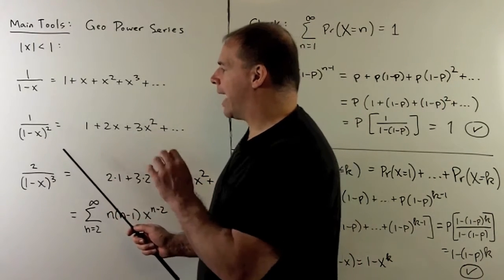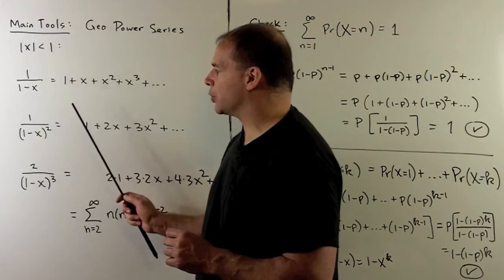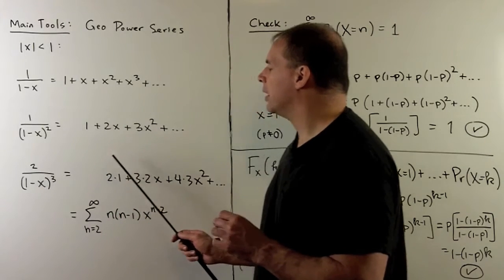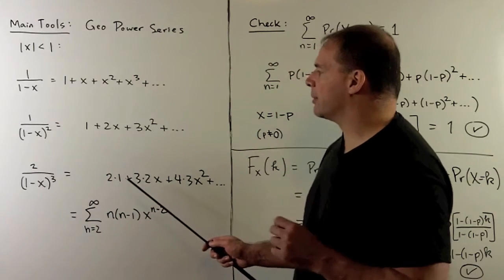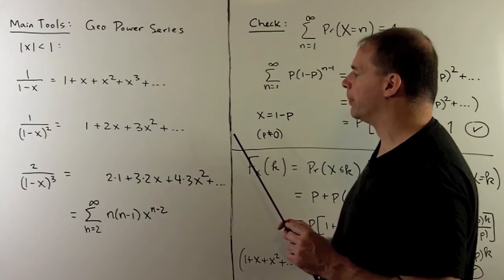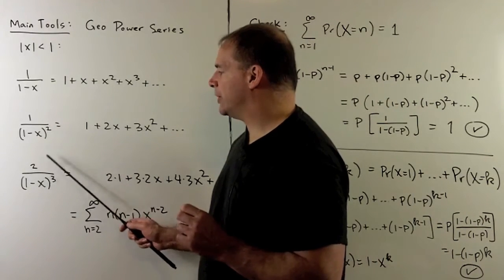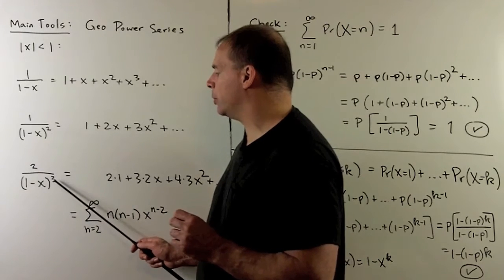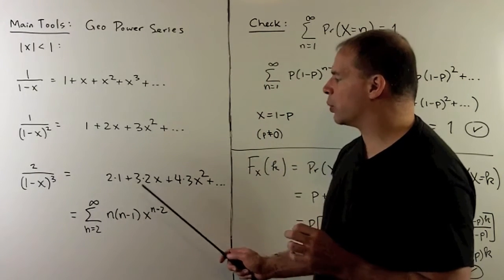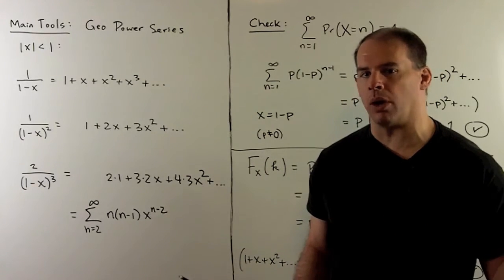On this region, we can make a new series by taking the derivative term by term, which will converge to the derivative of the function on the other side. Applying the chain rule to 1 over (1 minus X) — written as (1 minus X) to the minus 1 — its derivative is 1 over (1 minus X) squared, which equals the sum 1 plus 2X plus 3X squared and so on. Applying the derivative one more time, the chain rule gives 2 over (1 minus X) cubed, equal to the sum 2·1 plus 3·2·X plus 4·3·X² and so on.